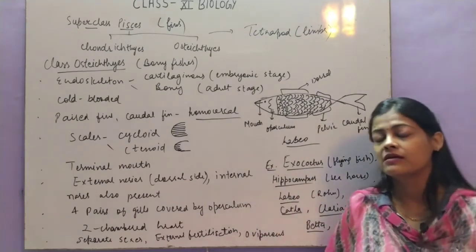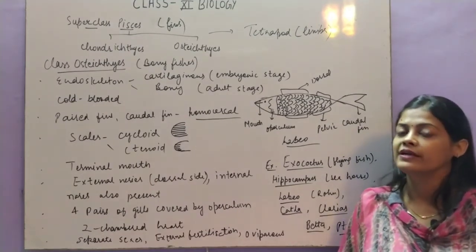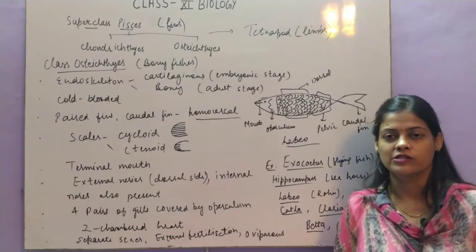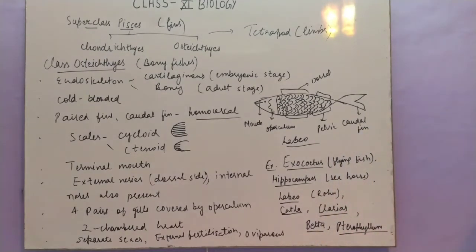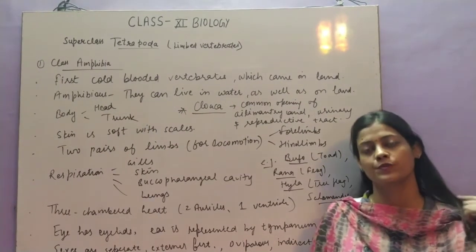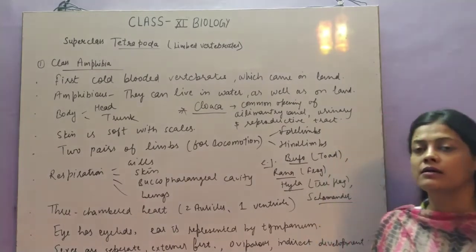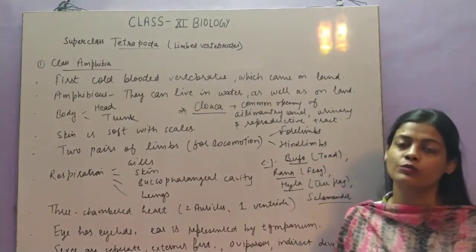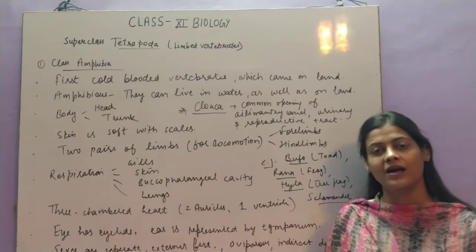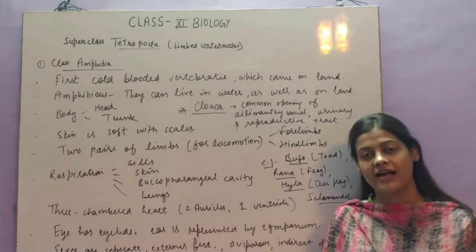Before Tetrapoda we had Pisces, which have fins for locomotion. Tetrapoda have limbs for locomotion. In Tetrapoda we will study four classes: Amphibia, Reptilia, Aves, and Mammalia. Now we will start with the first class, which is class Amphibia.